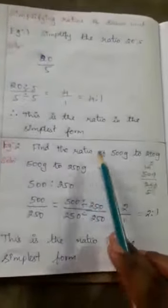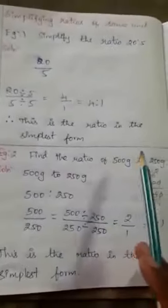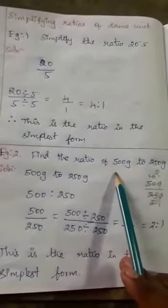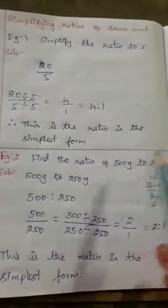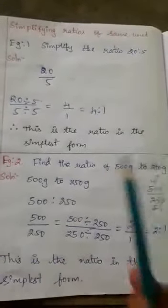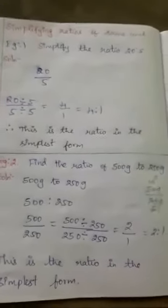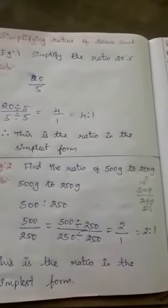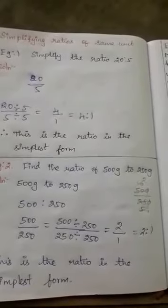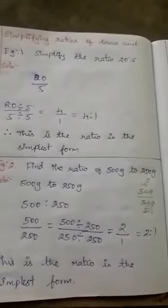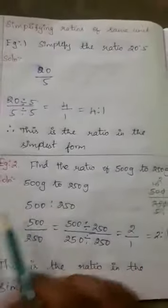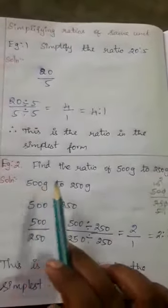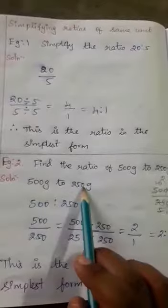Next, second example: find the ratio of 500 grams to 250 grams. 500 gram to 250 gram — it is a very easy method. We write 500 to 250.